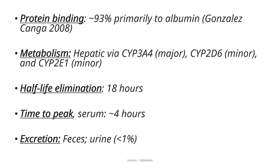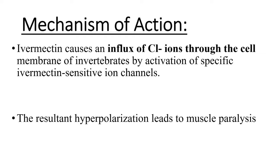CYP3A4 is the major pathway, and CYP2D6 and CYP2E1 are minor metabolism pathways. The half-life elimination is around 18 hours and time to peak in the serum is around 4 hours. Excretion is through feces majorly and through urine at less than 1%.